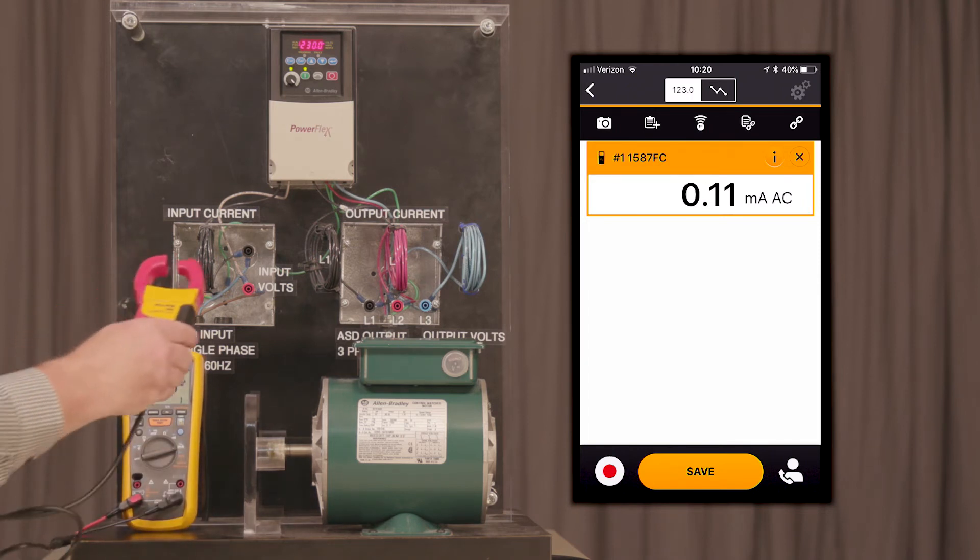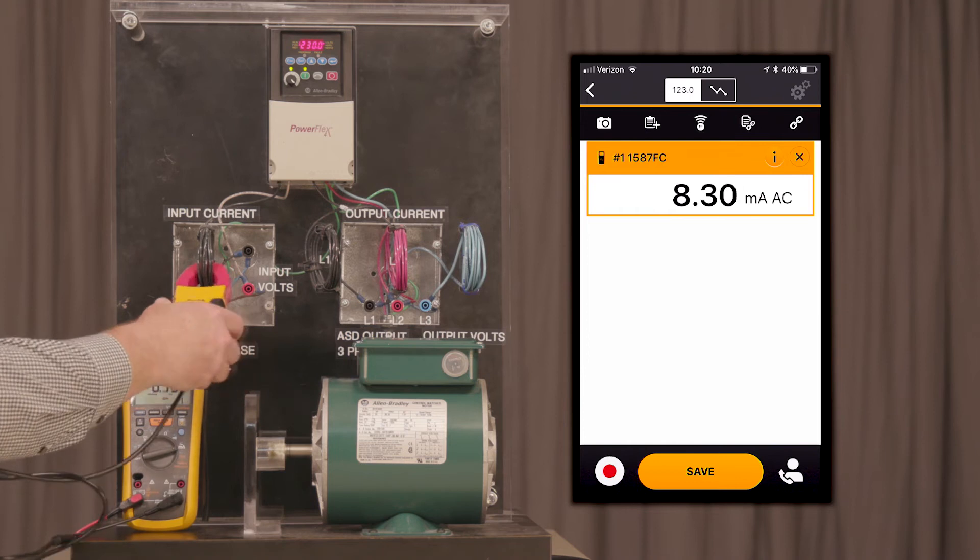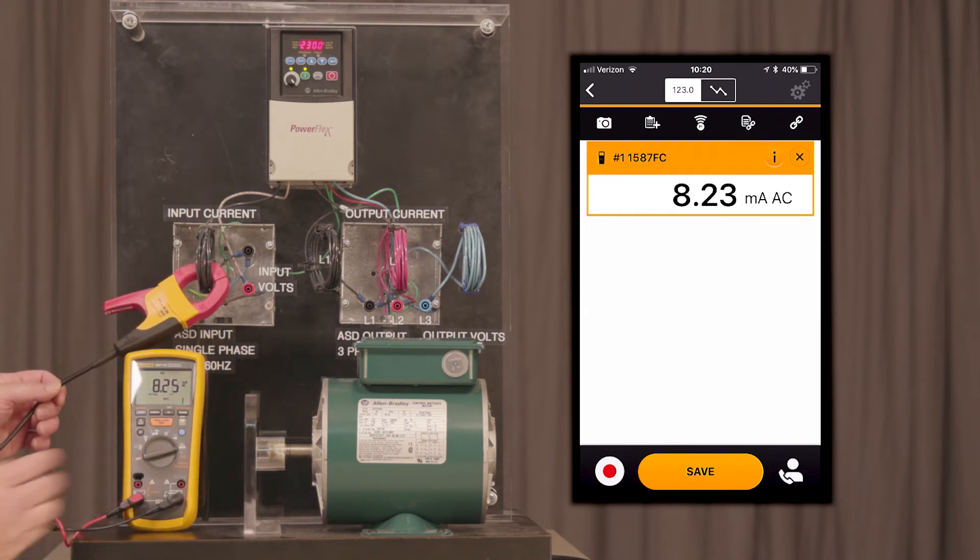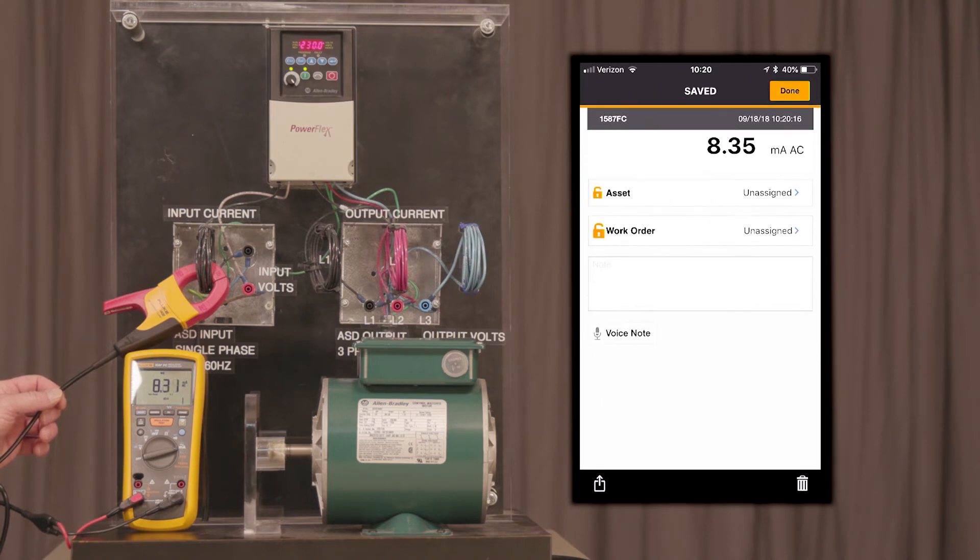Let's go ahead and make a current input measurement on the input to the VFD drive. As you can see here, I'm getting 8.3 amps. We're going to go ahead and save this measurement.